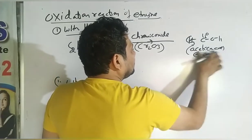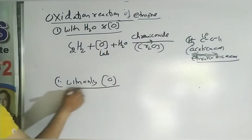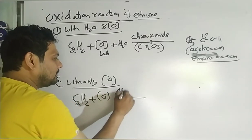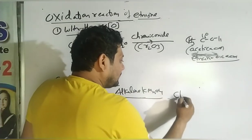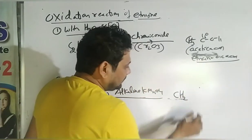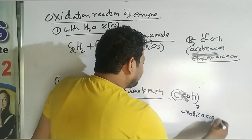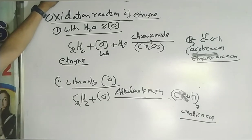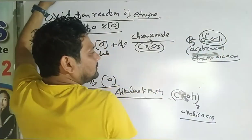Ethenoic acid is formed when ethyne reacts with O2 and H2O in the presence of chromic oxide. If ethyne reacts with only oxygen — no water — in the presence of alkaline KMnO4, then oxalic acid (COOH)2 is formed. So two oxidation reactions: with O2+H2O/CrO3 → acetic acid; with O2/alkaline KMnO4 → oxalic acid.